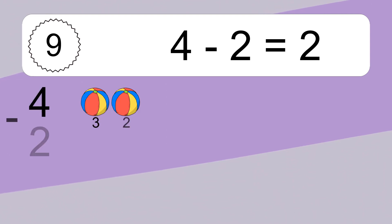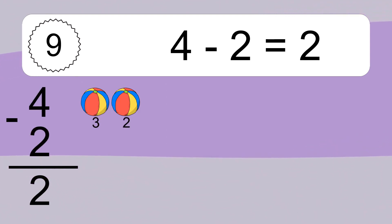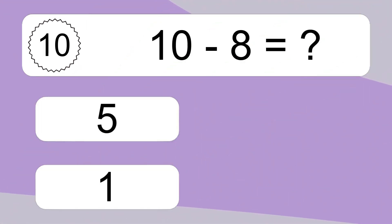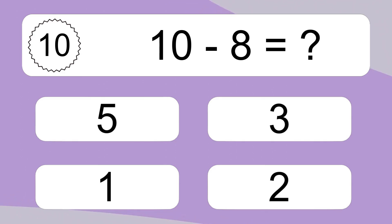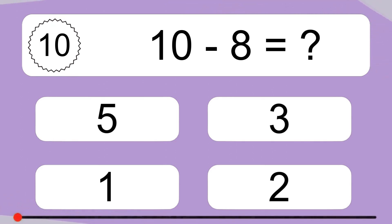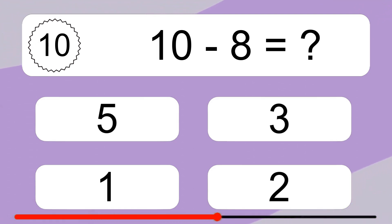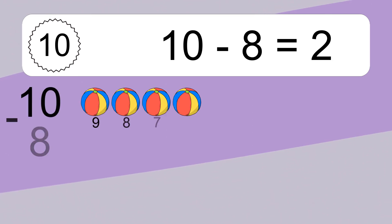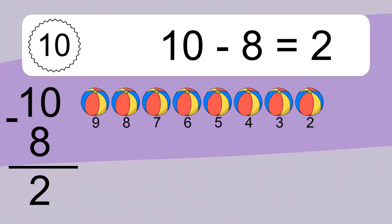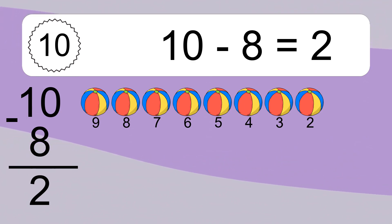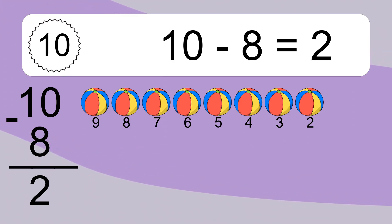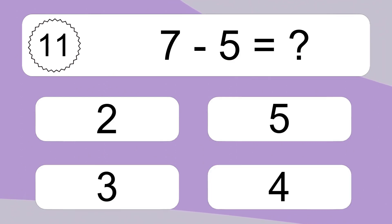4 minus 2 equals 2. Let's count it: 3, 2. 10 minus 8 equals what? 10 minus 8 equals 2. Let's count it: 9, 8, 7, 6, 5, 4, 3, 2.